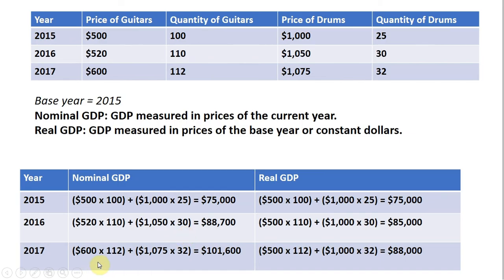And likewise, I do a similar thing for 2017 — just the prices in 2017 multiplied by the outputs of those goods in 2017.